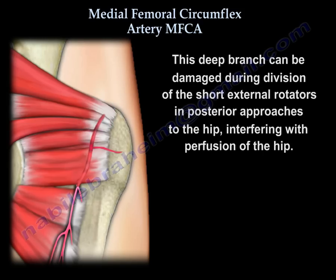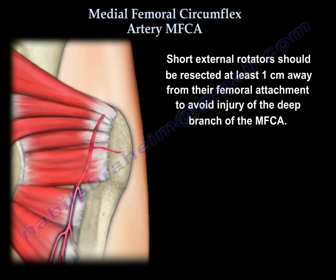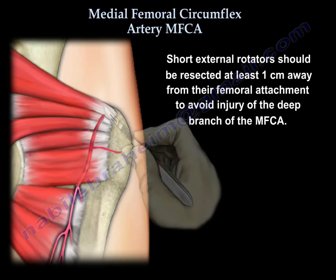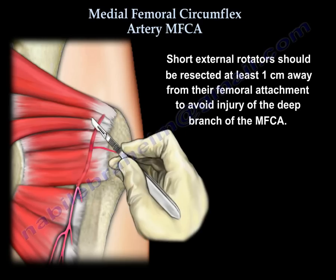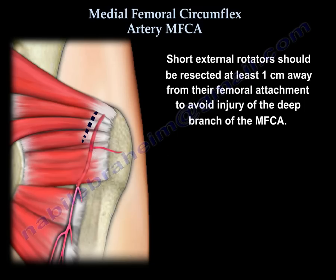The deep branch can be damaged during division of the short external rotators in posterior approaches to the hip, interfering with perfusion of the hip. Short external rotators should be resected at least one centimeter away from their femoral attachment to avoid injury to the deep branch of the medial femoral circumflex artery.